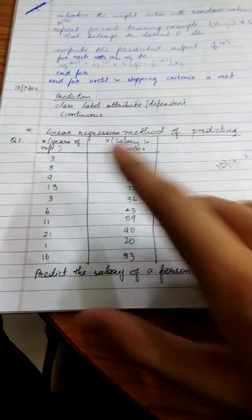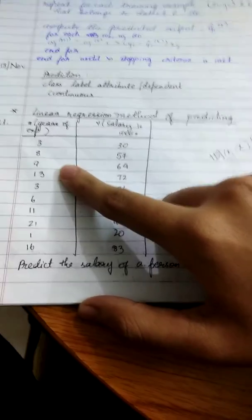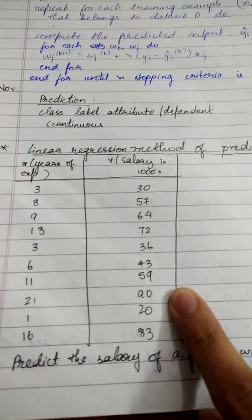In linear regression, you have values for X and Y. X is called the predictor variable and Y is called the response variable.